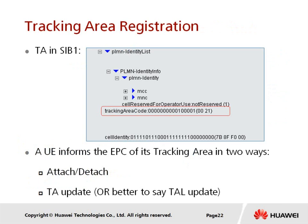For tracking area update, once the user performs cell selection, the user has to perform attachment which is registration. From time to time the user might have to perform TAU, which is tracking area update. The TAC (tracking area code) is broadcasted in SIB1. The user follows a tracking area list in order to perform tracking area update, and the list of the tracking areas (TAL) is stored and configured in the MME.